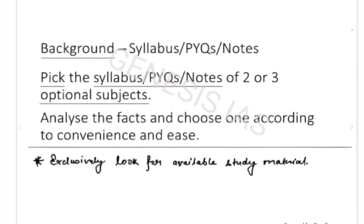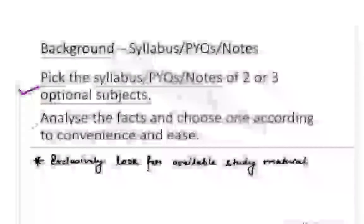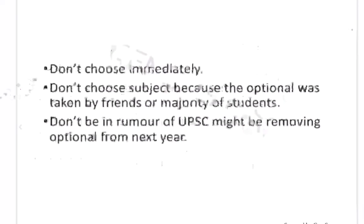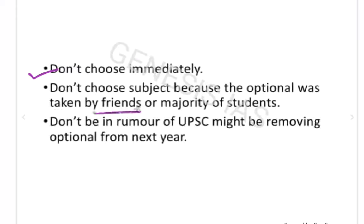So how to choose the optional subject? First, see the syllabus of that optional subject, then look at the previous year questions and notes for that subject. Choose two to three optional subjects and then decide which one to go with. Don't choose an optional subject immediately, and don't choose a subject just because your friends are taking it or because a majority of students are taking it.